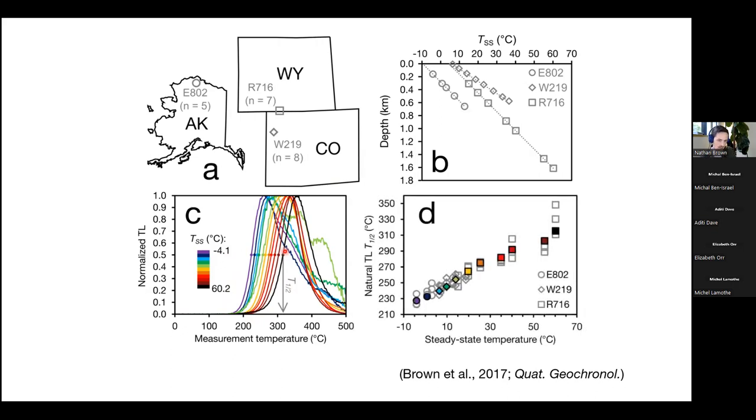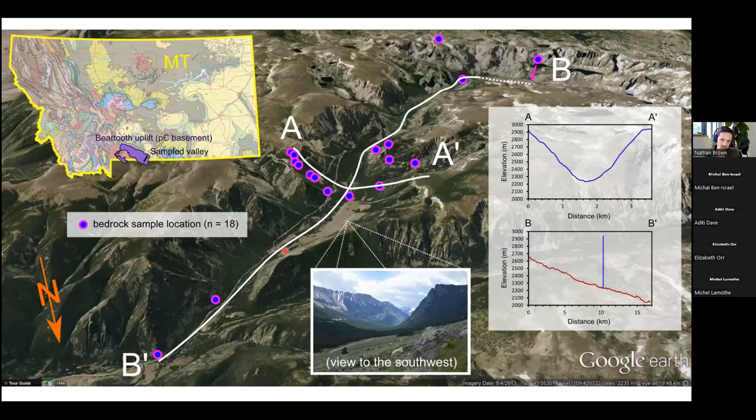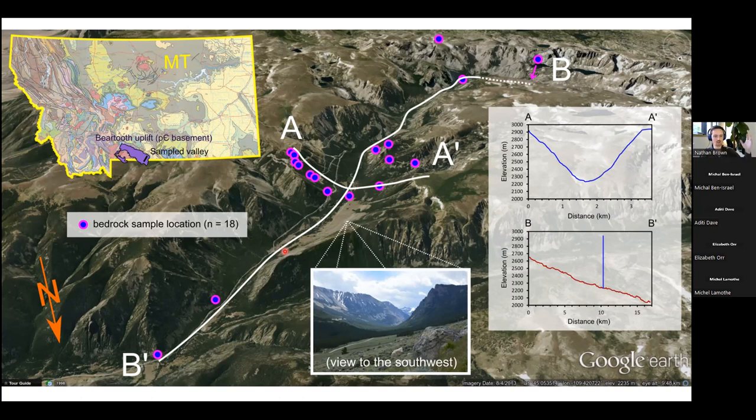So how might something like this be useful? Well, here's a series of samples that we collected from the Beartooth Glacial Valley in Montana. So this is just north of Yellowstone Park. If you've ever driven north to Red Lodge, Montana, you'll have gone on this scenic highway. It's really beautiful. And it's sort of a textbook example of a U-shaped glacial valley.